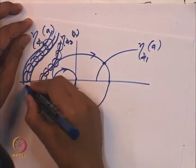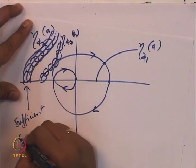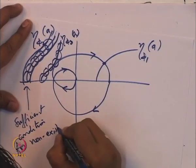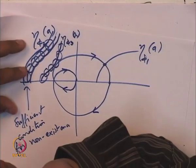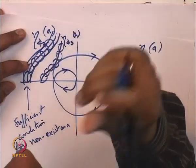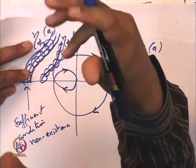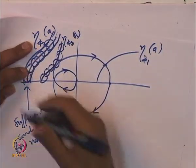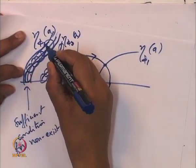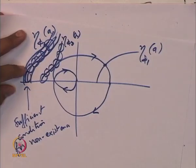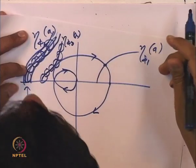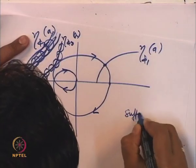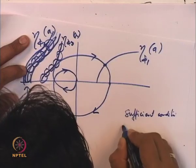This gives us the sufficient condition for non-existence. Now, what happens if the band intersects? Is the opposite — that the band intersects the Nyquist plot — a sufficient condition for existence of periodic orbits? We are going to ask for a sufficient condition for existence.